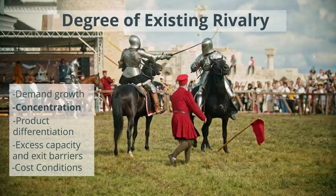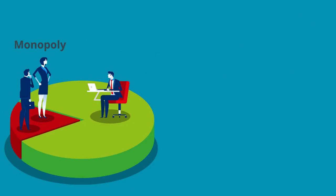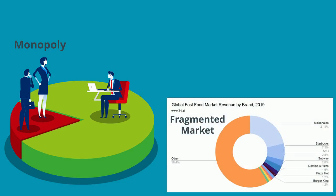Now let's talk about the effect of market concentration. The most concentrated markets are called monopolies — this is when one company controls an overwhelming share of the market. These markets face very little price pressure at all. The opposite end of the spectrum is a fragmented market, where there are lots of small players competing vigorously, which often has considerable price competition.